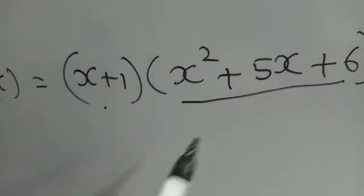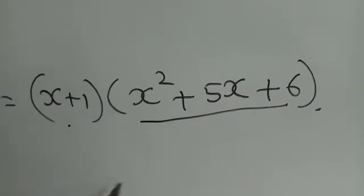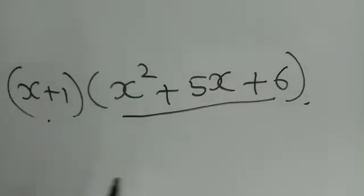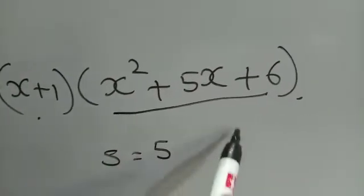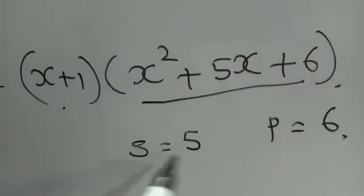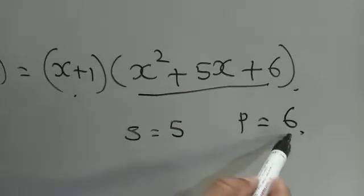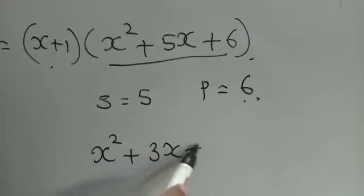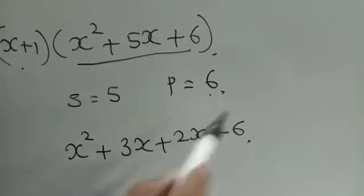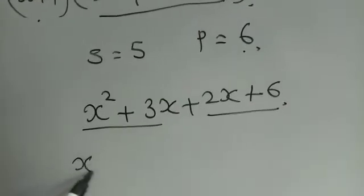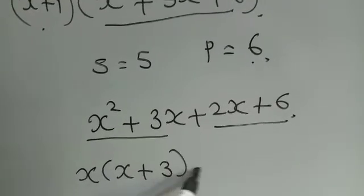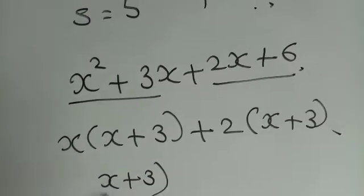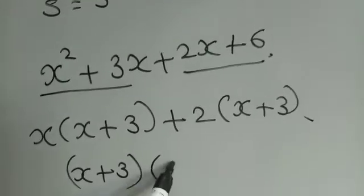We already know how to find the zeros of a quadratic polynomial by factoring it. We factorize x² + 5x + 6. The sum is 5 and the product is 6; both are positive, so the possible factors of 6 are 3 and 2. Splitting the middle term as 3x + 2x and taking common factors: x(x + 3) + 2(x + 3), so the quadratic factors into two linear polynomials (x + 3) and (x + 2).